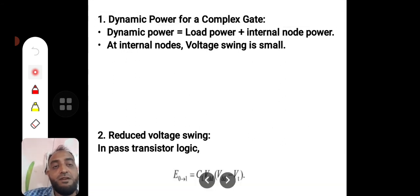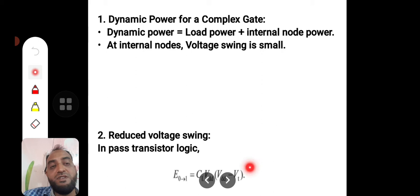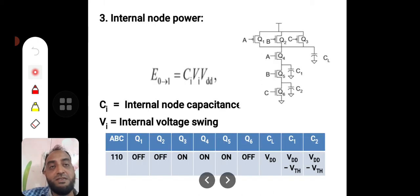Because of pass transistors with reduced swing, the energy from 0 to 1 will be C_L × V_DD × (V_DD − V_t), where the (V_DD − V_t) factor is due to the pass transistors.